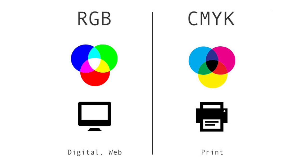To start off, RGB — red, green and blue — is the color space that is currently being used while you're watching this very course. You should use the RGB color mode when your design is supposed to be displayed on any kind of screen, whether it would be a phone, computer, or any other kind. The RGB color mode creates each specific color by using the light source found within a device, by combining red, green and blue and varying their intensity.